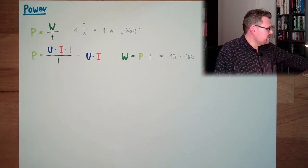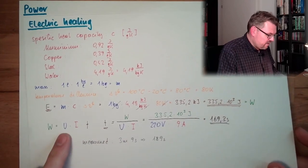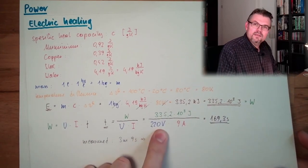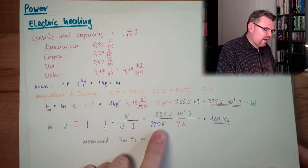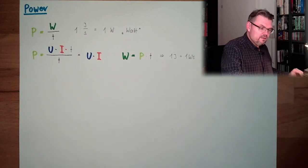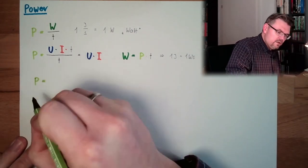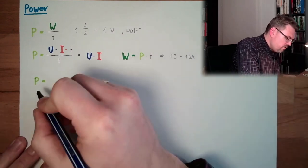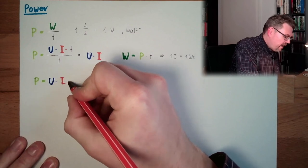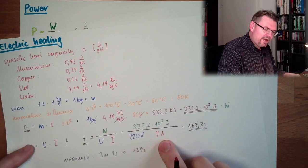Last time we talked about this heating. And we calculated here. And I said, okay, this I was 9A and the U was 220. So, we are calculating now the power of our heater. Here, in the example, we had power equals U multiplied by I. And in our case, U was 220 volts and I was 9A.